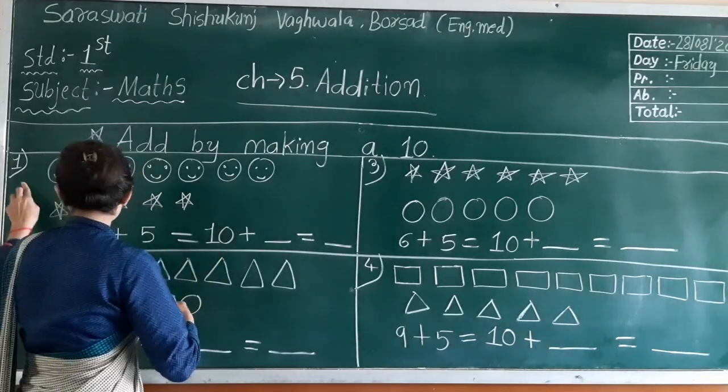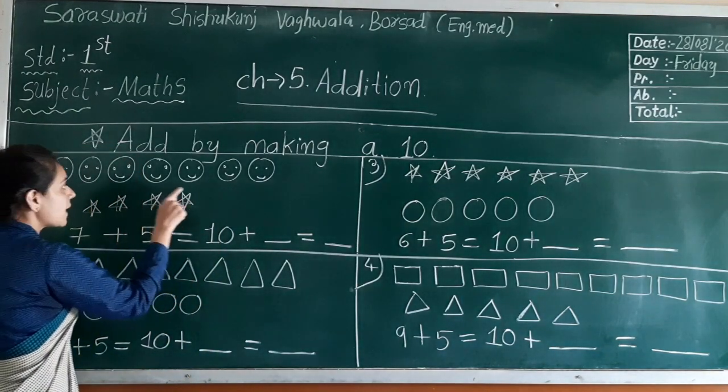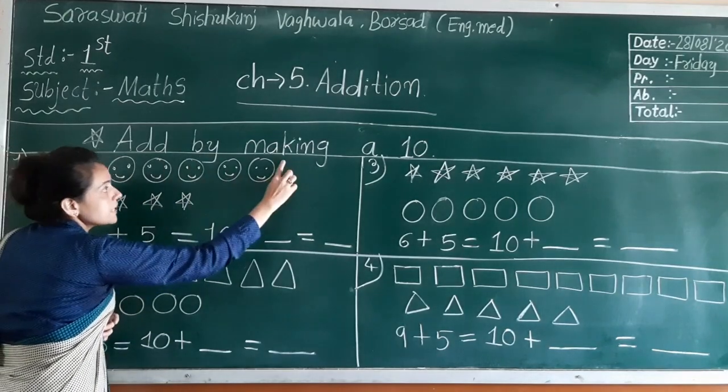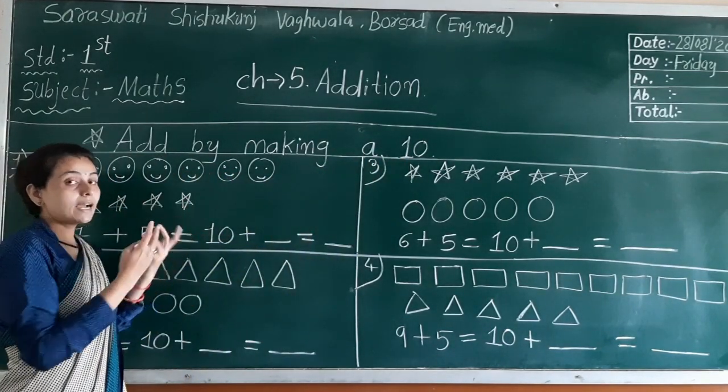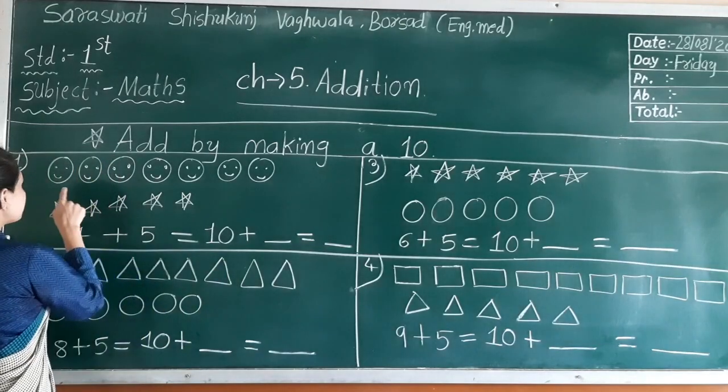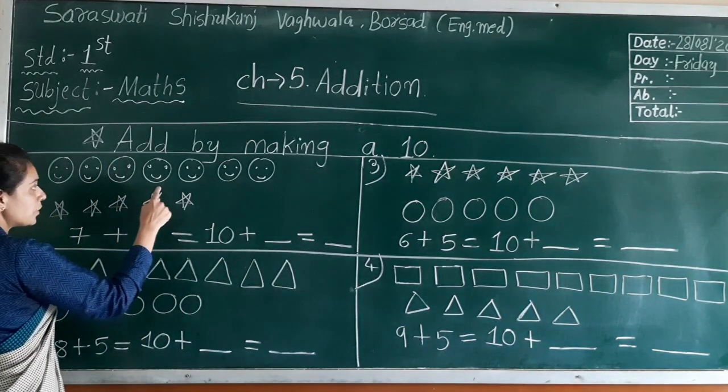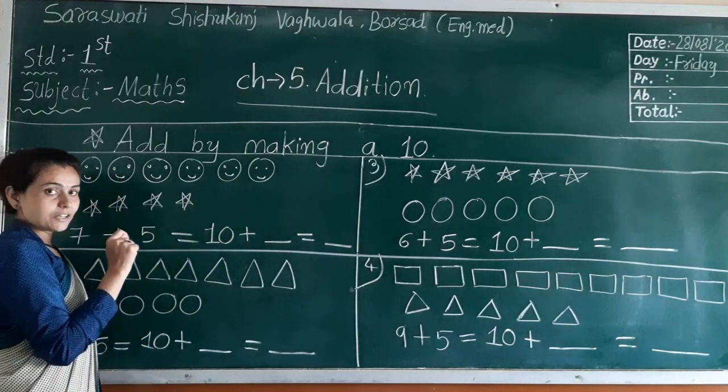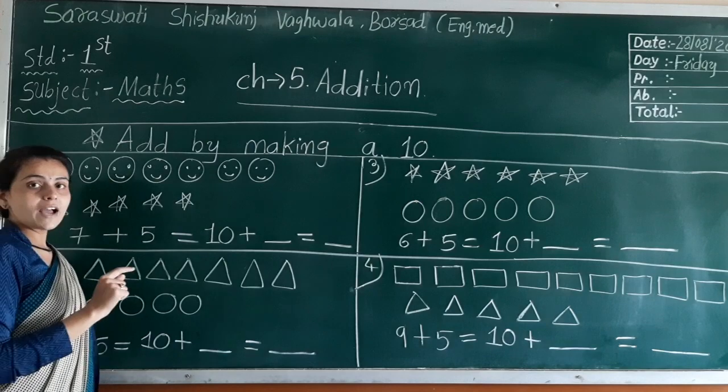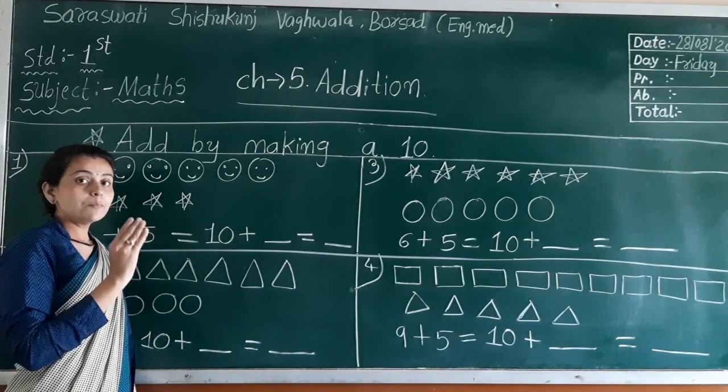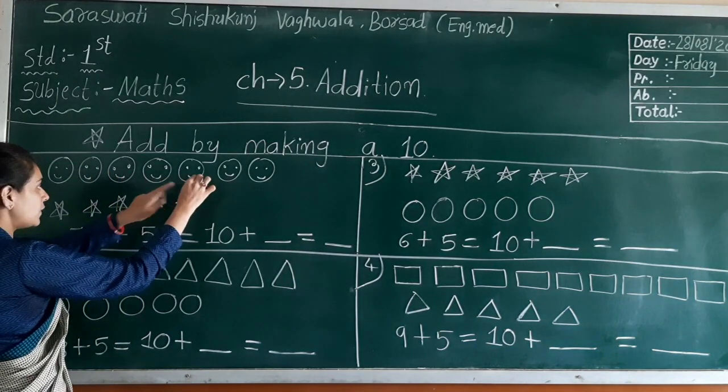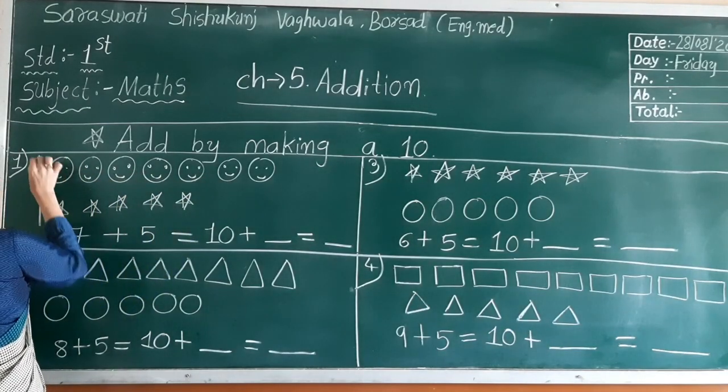Now look at here. First a number, here smileys are one and here stars. So first what you have to do? Add by making of 10. You have to add them, but how? First you have to make one bunch of 10 objects. Look at here: 1, 2, 3, 4, 5, 6, 7. Seven smileys are given. And downside: 1, 2, 3, 4, 5. Five stars are given. So first make a bunch of 10. 1, 2, 3, 4, 5. This five, and five stars.